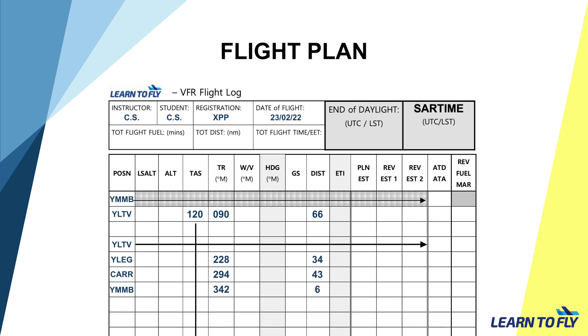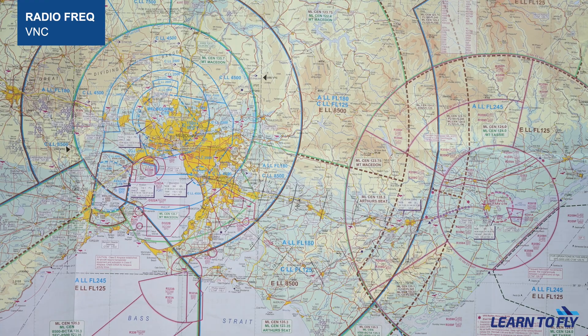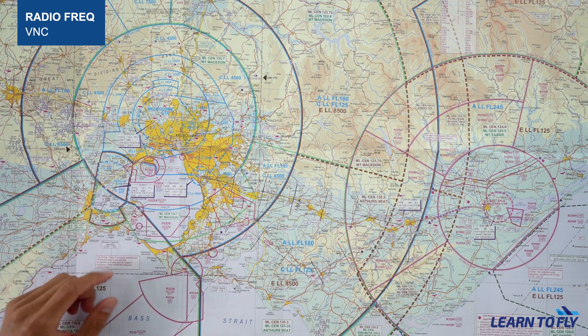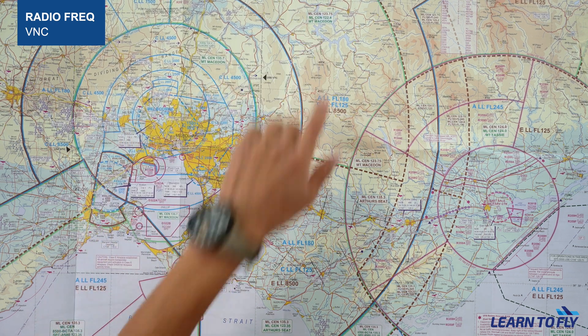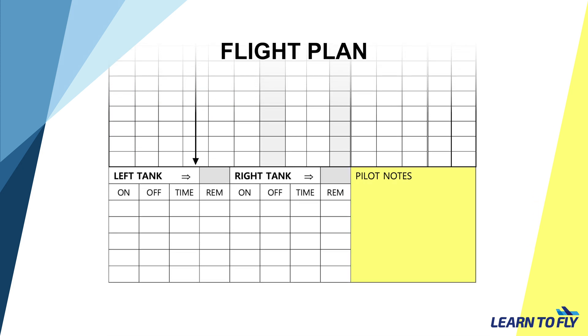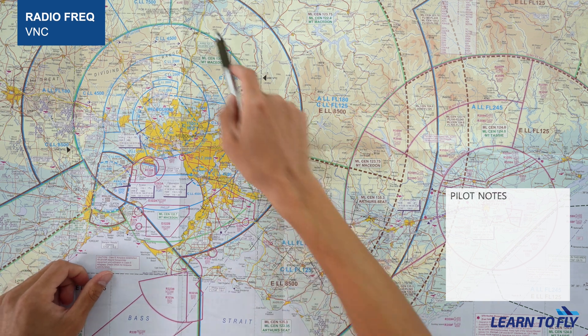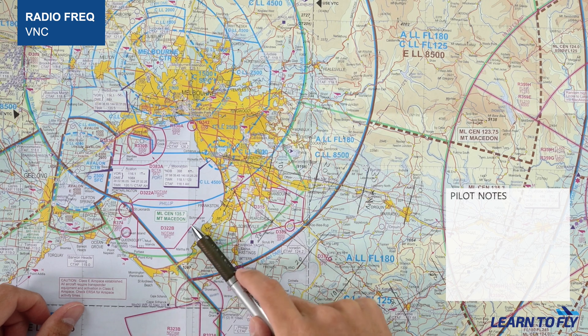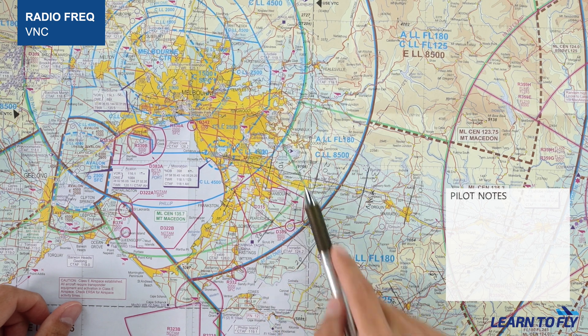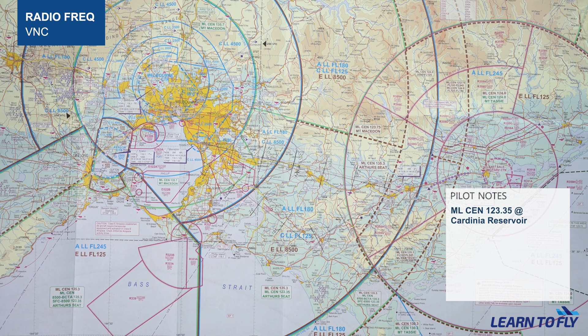I will now quickly finish the rest of the flight plan. After obtaining the distance of all the legs, we add them all up and put the total at the top. On the VTC or VNC, the green boundaries indicate different sectors of Melbourne centre airspace, each with different frequencies. To remind ourselves to change frequencies, I would strongly advise leaving a note in the given space on the flight plan sheet. The Melbourne centre frequency wrapping around Moorabbin and Melbourne is 135.7. Along the route, we will cut across Melbourne centre near where Cardinia Reservoir is abeam to our left — at that point, switch frequency to 123.35.